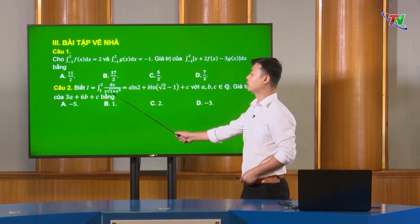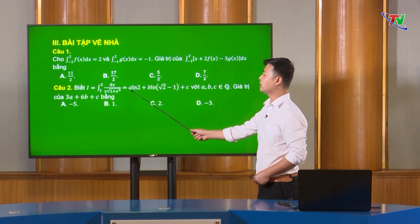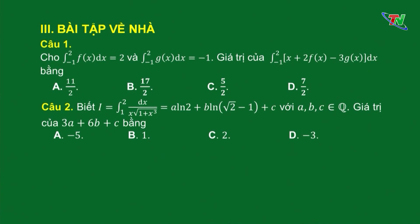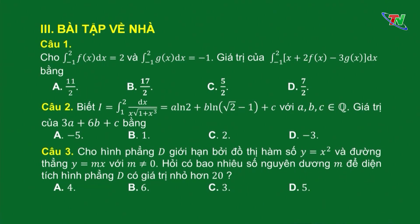Câu hỏi số 2: biết y bằng tích phân từ 1 đến 2 của dx/[x·(1+x)^(1/3)]. Kết quả cho ở dạng A·ln2 + B·ln(∛2-1) + C, trong đó A, B, C là các số hữu tỉ. Hỏi giá trị của biểu thức 3A + 6B + C bằng bao nhiêu? Phương án A: âm 5; B: 1; C: 2; D: âm 3. Gợi ý: các em hãy dùng phương pháp đổi biến số, cụ thể là đặt t bằng (1+x)^(1/3). Câu hỏi số 3: cho hình phẳng D giới hạn bởi đồ thị hàm số y bằng x² và đường thẳng y bằng mx với m khác không. Hỏi có bao nhiêu số nguyên dương m để diện tích hình phẳng D có giá trị nhỏ hơn 20? Phương án A: 4; B: 6; C: 3; D: 5.